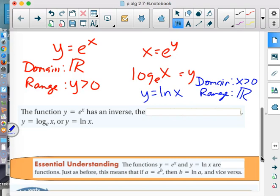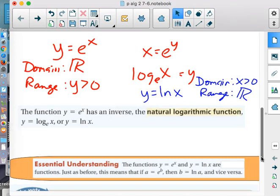Now remember, for inverses, those two things switch. So if I go over to the blue graph, and I think domain and range, well, now my domain is going to be x has to be greater than zero, but my range is going to be all reals. So the function y equals e to the x has an inverse, and that is called the natural logarithmic function.